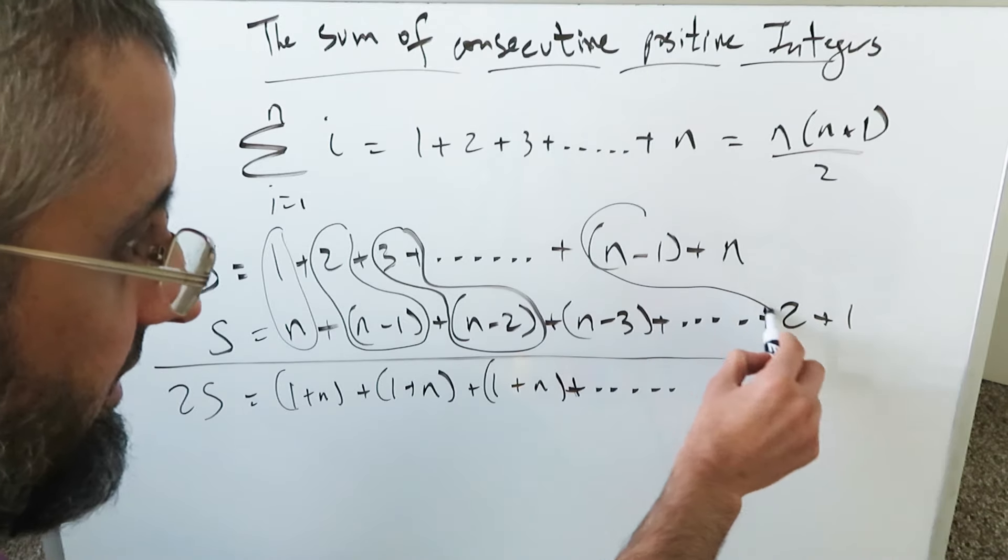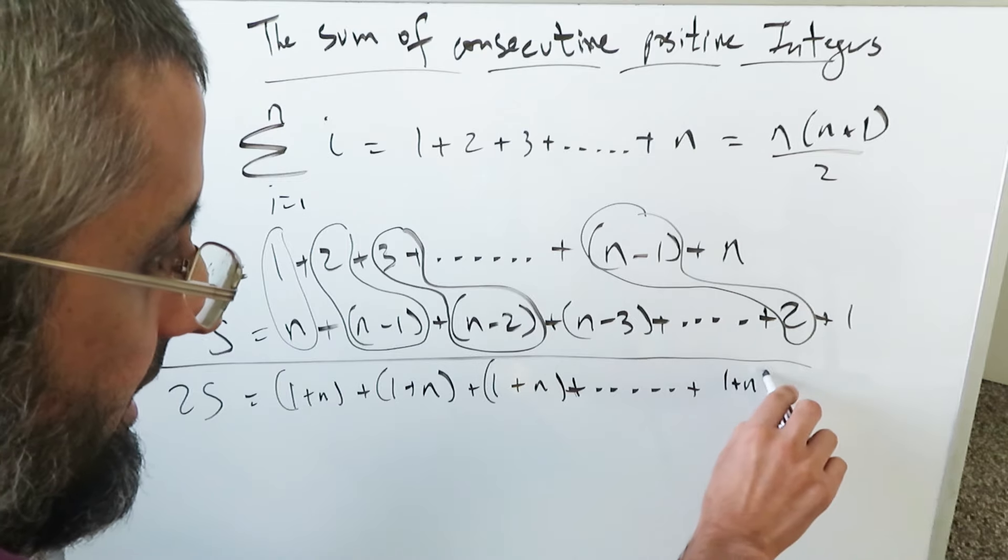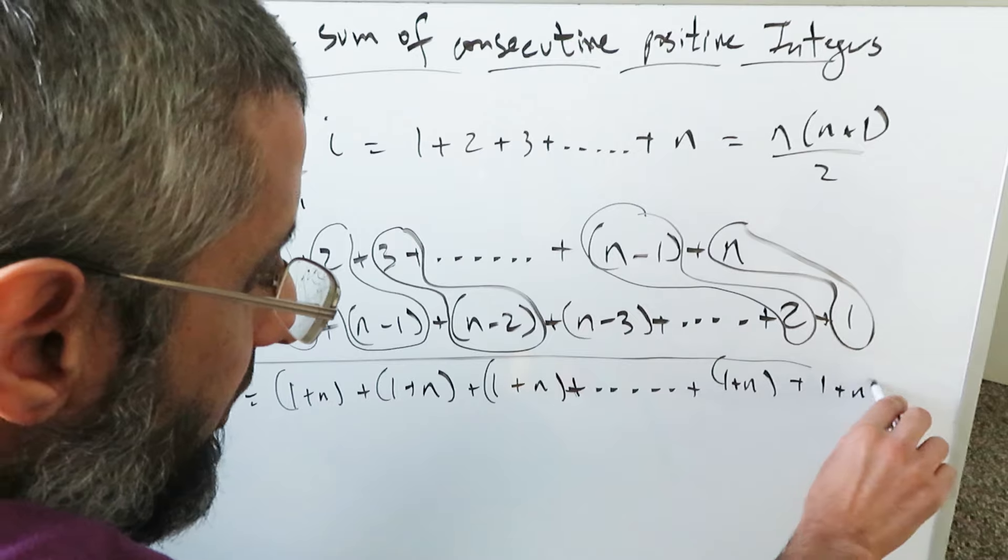Coming all the way over here, this with this right here, you're going to again get 1 plus n. And then finally with this and here, you're getting 1 plus n. What are you seeing here?